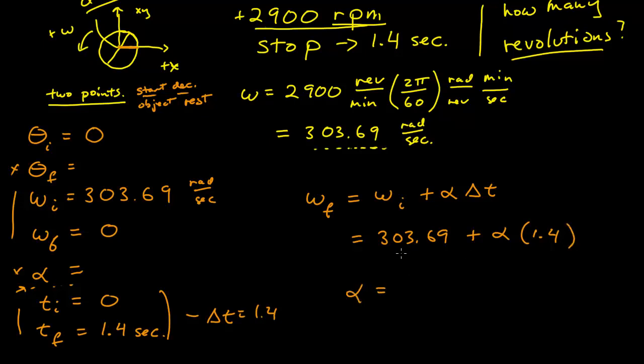I can solve that for alpha. Alpha is then equal to, my final is zero, equals negative 303.69 divided by 1.4, which is negative 216.92. Again, I'm keeping a fair number of significant figures here in my internal calculation.